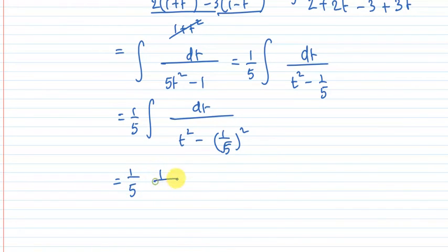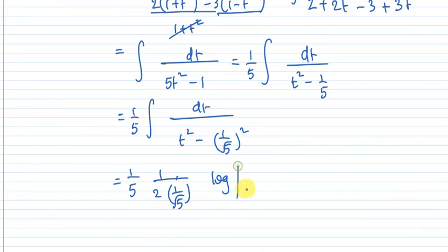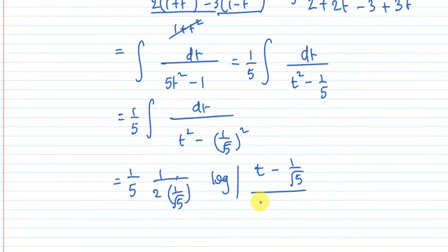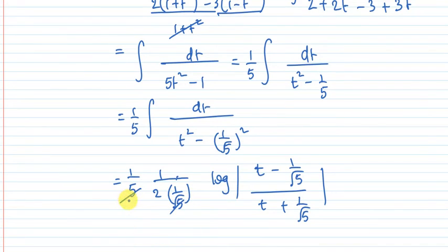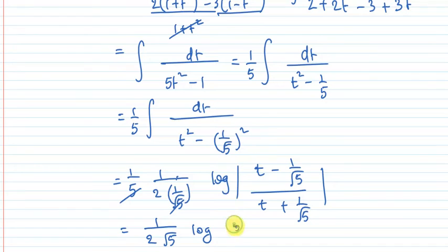Applying the formula 1/(2a) log|( x minus a)/(x plus a)|, with a equals 1/root 5: the result is 1/5 times 1/(2 times 1/root 5) times log mod of (t minus 1/root 5) divided by (t plus 1/root 5). Simplifying, this gives 1/(2 root 5) times log mod of (root 5t minus 1) divided by (root 5t plus 1).